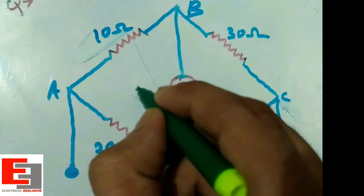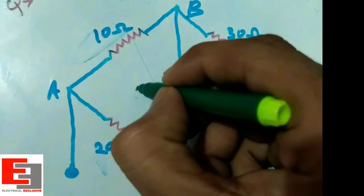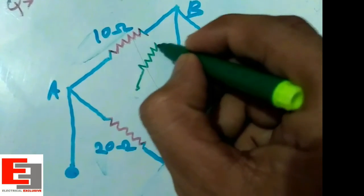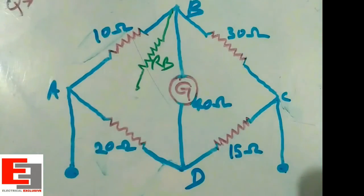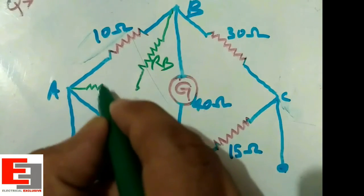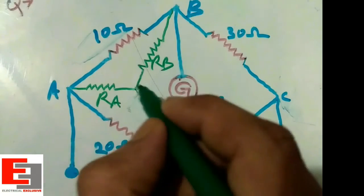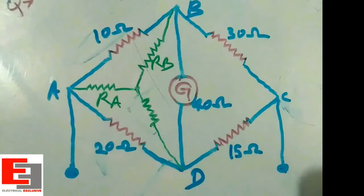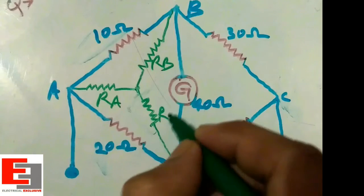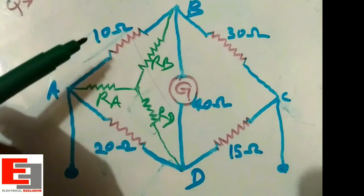Now I shall transform the first delta into star. Let's assume this is the midpoint. A resistance is connected to point B, so this is RB. Likewise, here is a resistance connected to point A, so this is RA. Let's find RA: it is equal to the product of two adjacent arms, which are 10 ohm and 20 ohm.